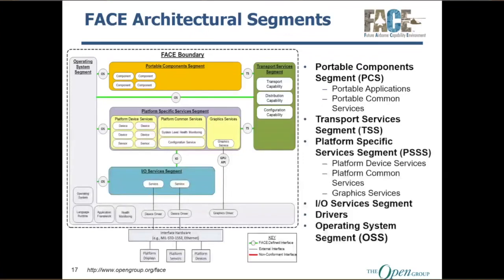Where does data modeling fit? We've got the different FACE segments here. These green lines represent the usage of the platform specific services segment components and the portable component segments. Anytime we want to communicate between any of these components — either within a segment or between segments — we have to use the FACE transport services segment. We can't communicate directly without going through transport services. Where the data model fits in is that all interfaces using transport services must be data modeled — we need to describe the data we're going to communicate into or out of our component.